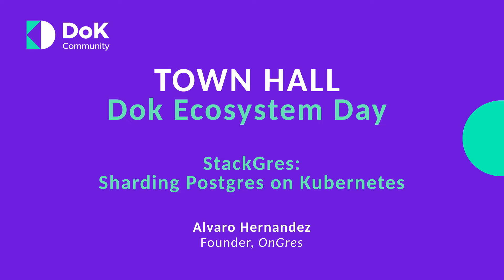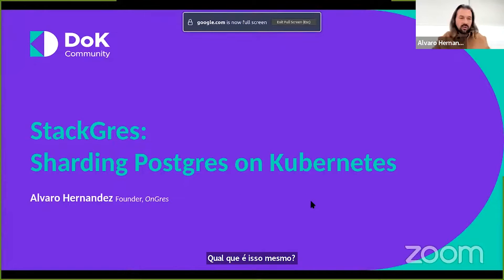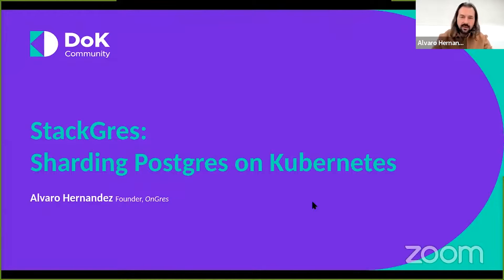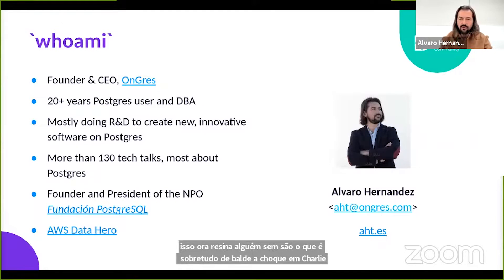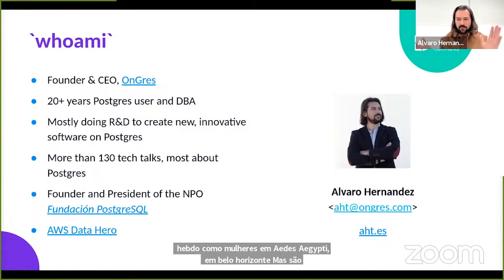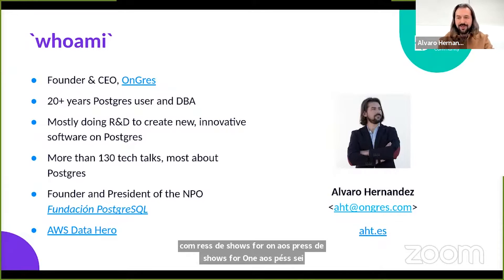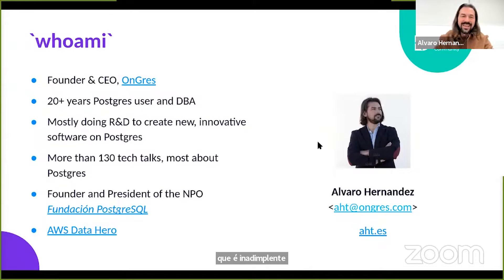I'm going to talk about sharding and sharding on Kubernetes. Let me briefly introduce myself first. I am the founder and CEO of a company called OnGres. OnGres is short for 'On Postgres', so you can imagine what we do. For people that know me, I'm the 'Postgres, Postgres, Postgres' person — if you call me three times I'll pop up anywhere you are.